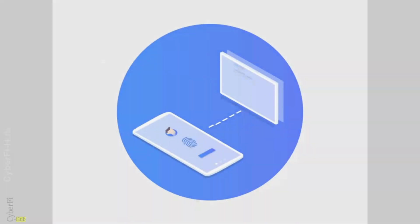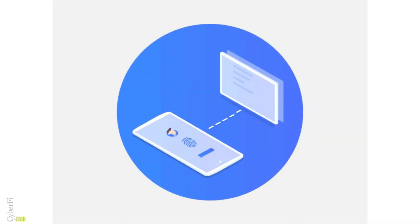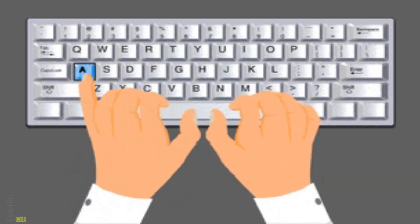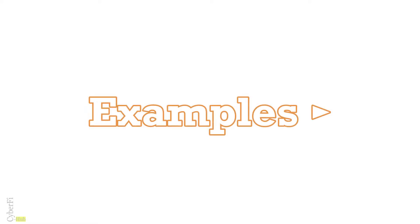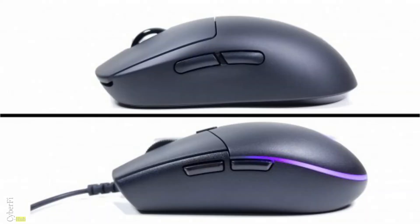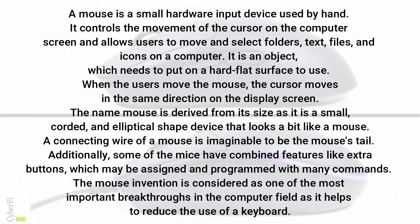Input devices are those devices which are used to enter data for processing in a computer, or which transfer information or instructions to the computer from the user. There are lots of examples of input devices, like the mouse, which inputs data by clicking or scrolling.